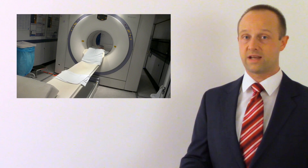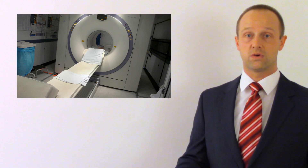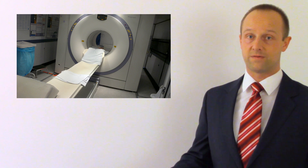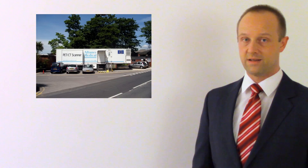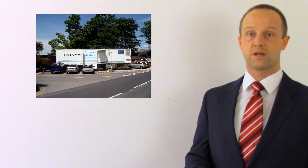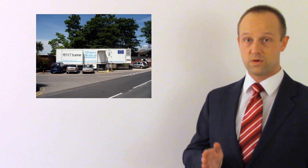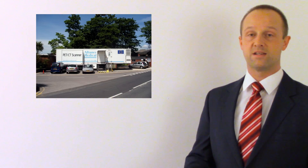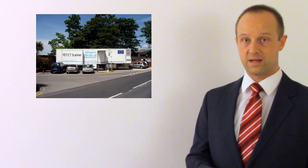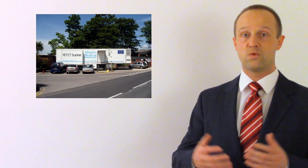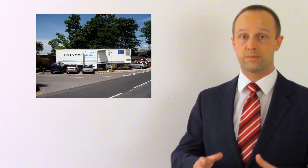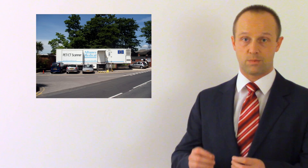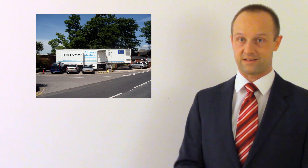It takes a computer to make sense of all this data, but we have powerful enough computers now to be able to do that. Quite often a PET scanner is also combined with a CT scanner, so you can combine those x-ray slices through the brain with information about exactly which part of the brain is active. This gives you a 3D structure of the brain showing exactly which bits are involved in a particular task.